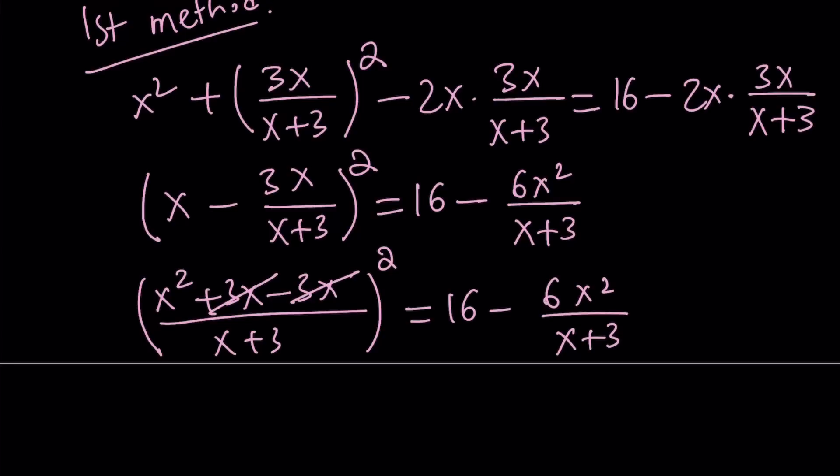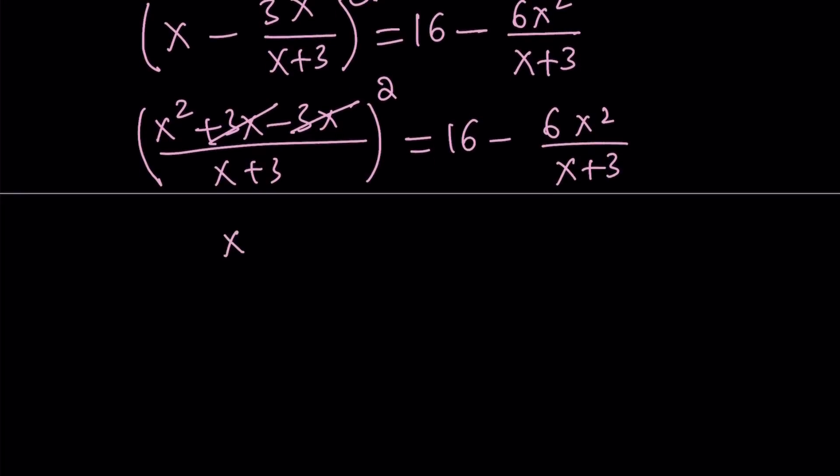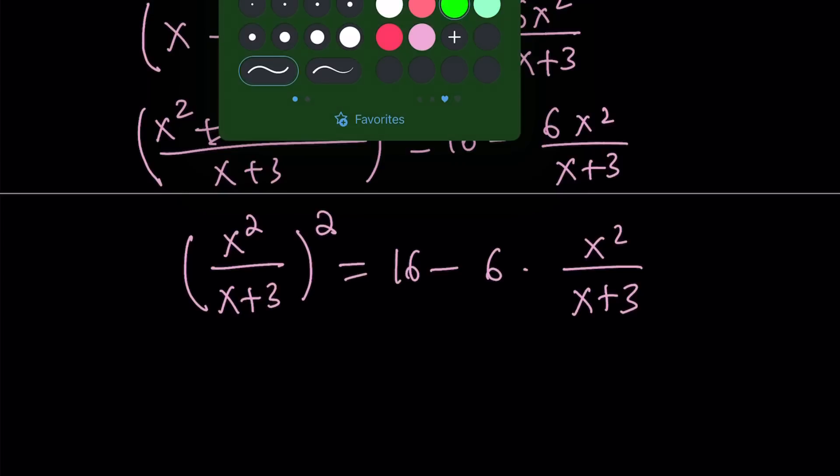And now we're going to use substitution. Notice that the 3x cancels out and we end up with a nicer expression. So it becomes x squared over x plus 3, quantity squared equals 16 minus, and I want to separate the 6 here so you can better see what I'm talking about.